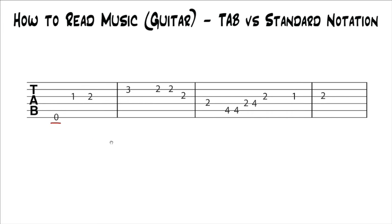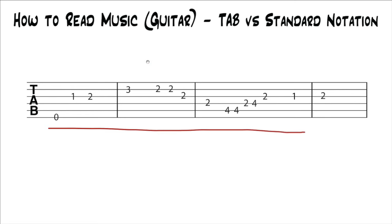Tab is really easy to understand, but it's also really incomplete. If you were to look at tab, you would have no idea what your rhythm was — you wouldn't know how long to hold any of the notes, and you wouldn't know what your time signature was unless someone had written that in, which most people don't. To be able to play it correctly, you'd have to actually hear the piece you were trying to play, use the tab to find where all the notes are, but listen to the piece to hear the rhythm and how all the notes are held out.